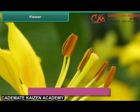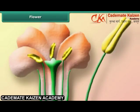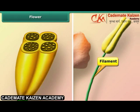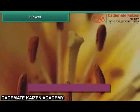The male part of the flower comprises one or more stamens. Each stamen is a stalked structure. The stalk is called the filament. Atop the filament are two sacks containing pollen. These sacks are known as anthers. The female part of the flower is called the pistil.